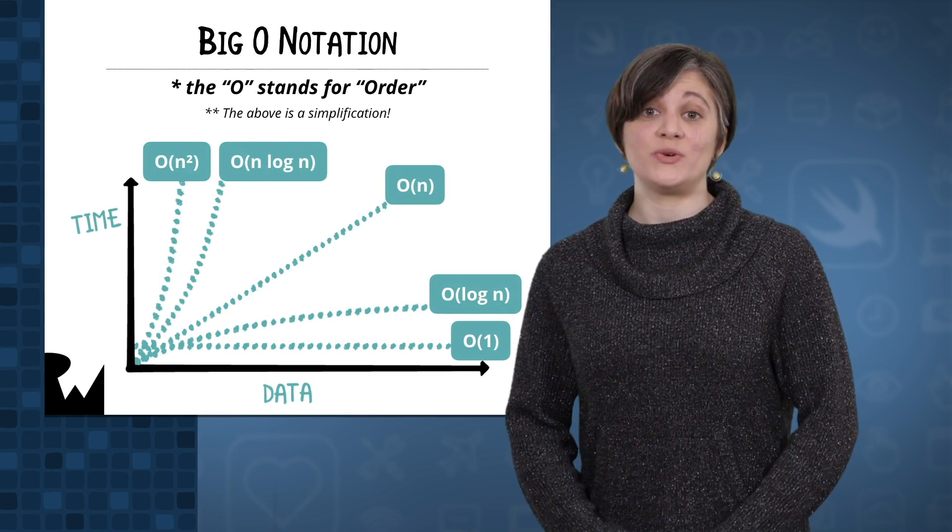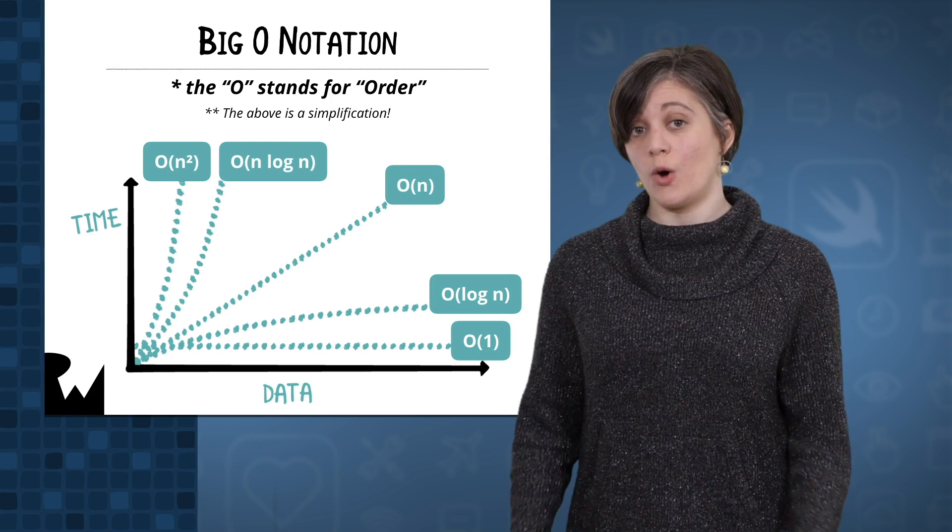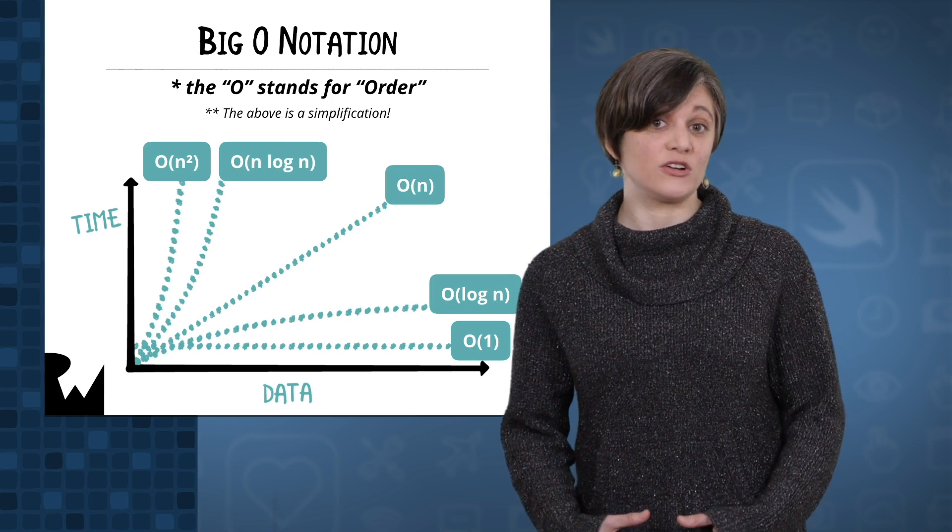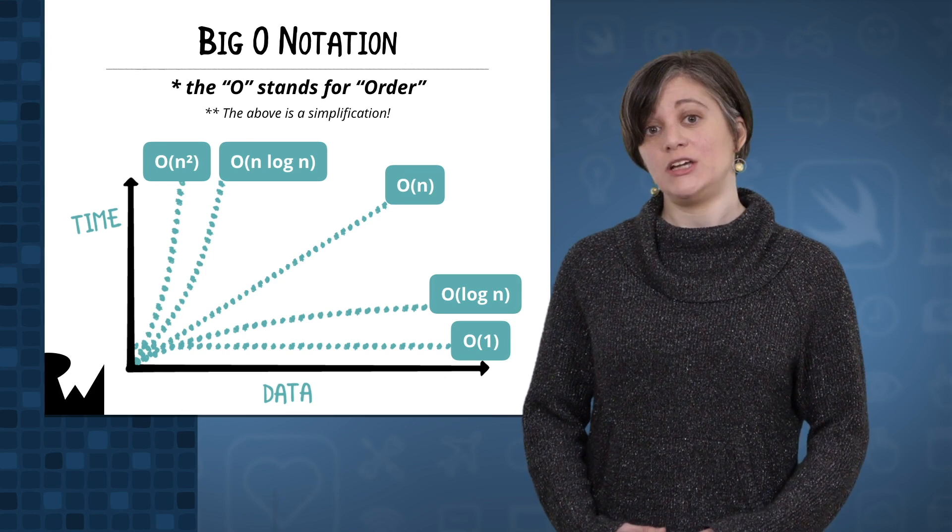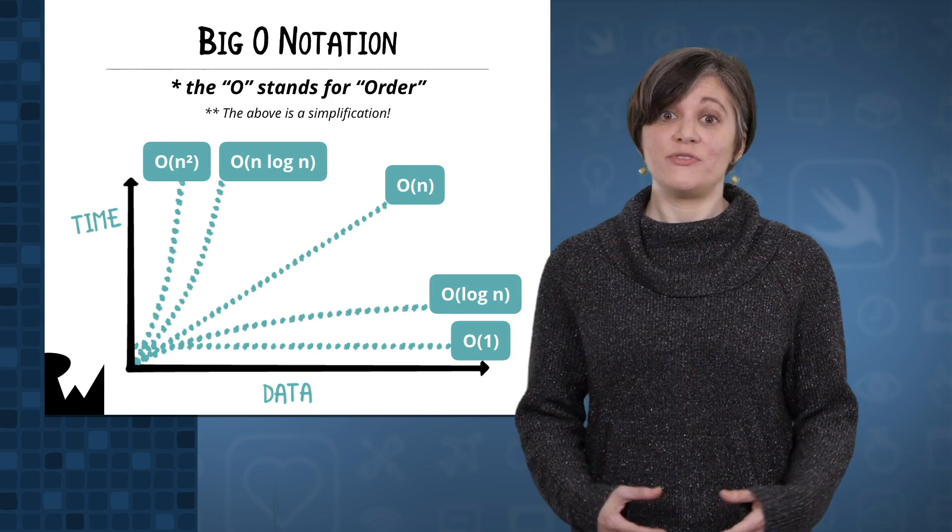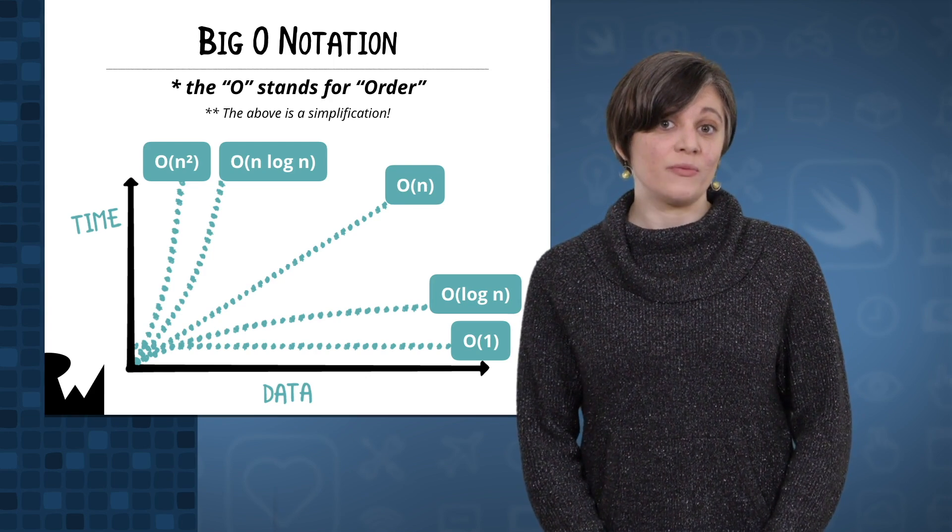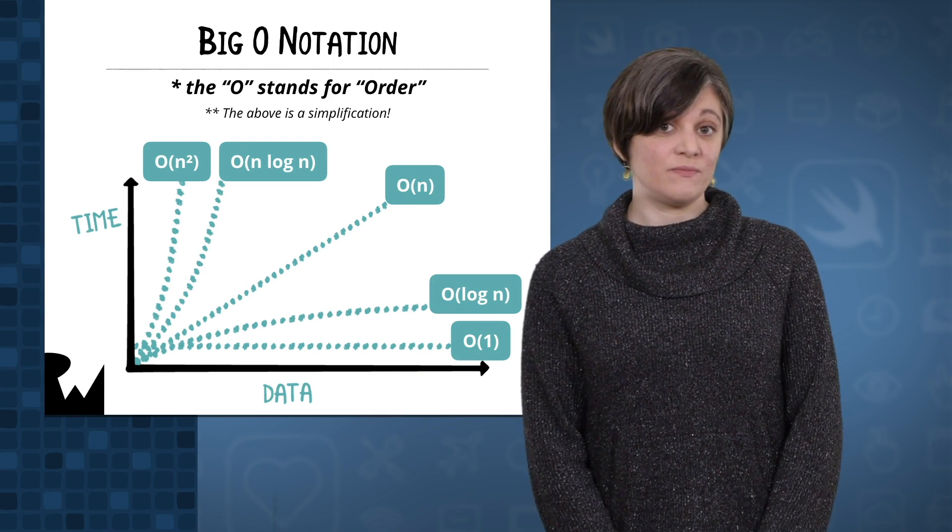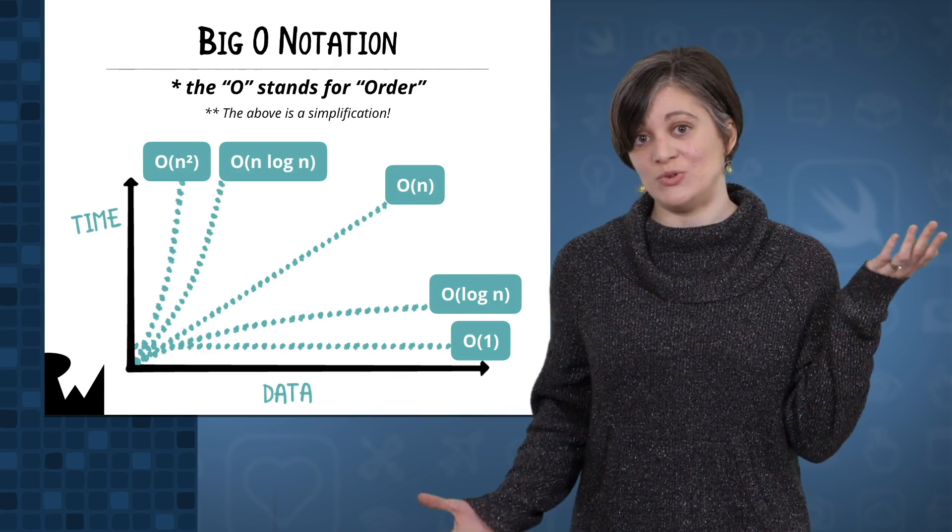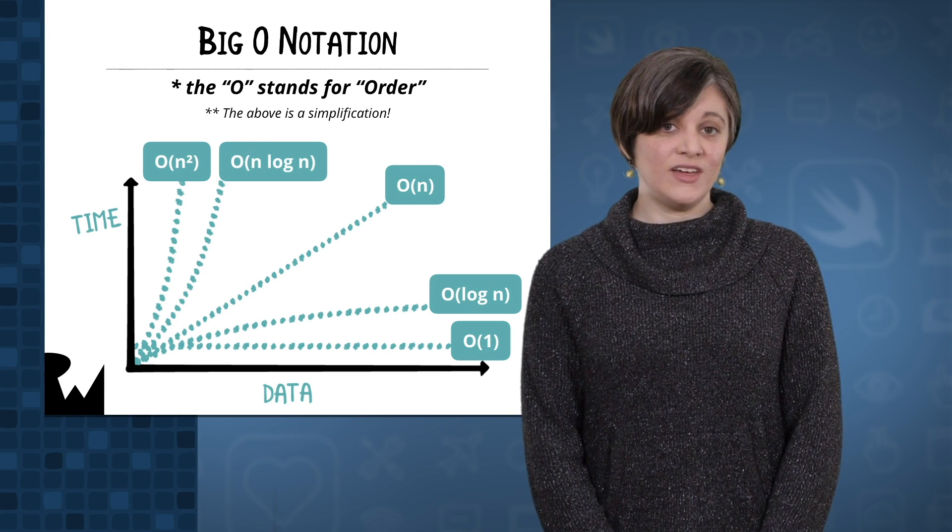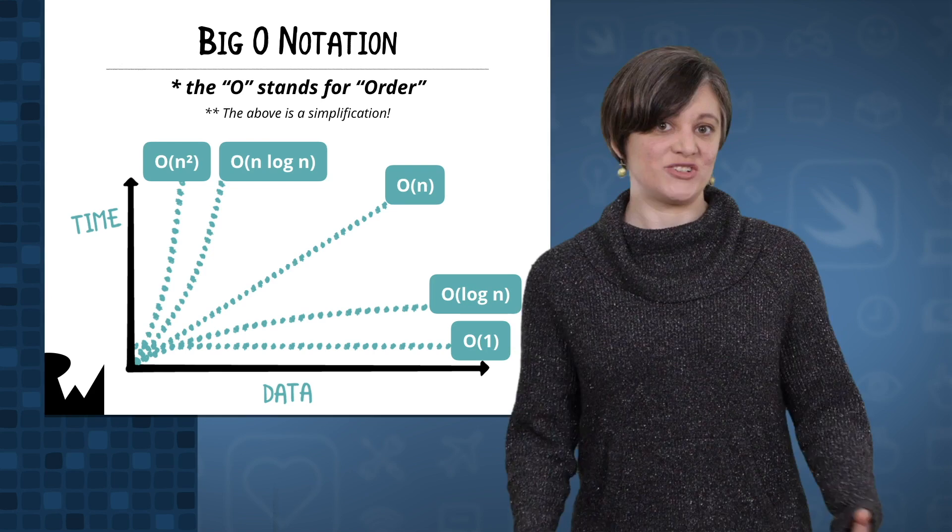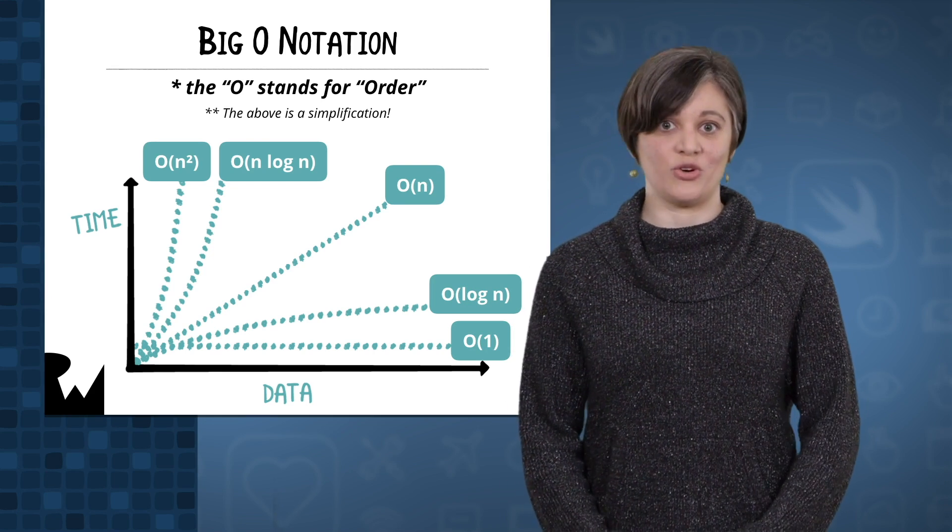Before we get into it, there's some common terminology and concepts you should know. Throughout the course, we'll refer to two measures of complexity in regards to algorithms, time complexity and space complexity. Time complexity is a measure of the time required to run an algorithm as the input size increases. Programmers use a notation known as Big O notation to represent different magnitudes of time complexity. The same notation can be used to measure space complexity, which is a measure of the memory needed for an algorithm to run.